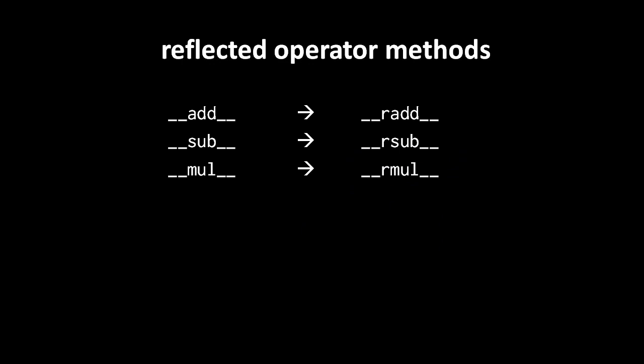The basic operator methods all have a corresponding reflected operator methods, which all have the same name except there's r in front. So the add method has a corresponding reflected add method, which is called r add.